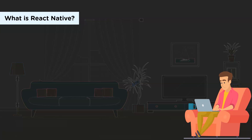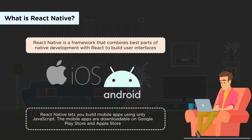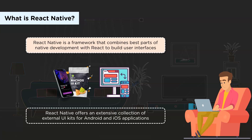What exactly is React Native? React Native is a framework that combines the best parts of native development with React to build user interfaces. Applications developed using React Native are downloadable on Google Play Store and Apple Store. Because most of the code you write can be shared between platforms, React Native offers a wide collection of UI kits and makes it easy to simultaneously develop for both Android and iOS devices.